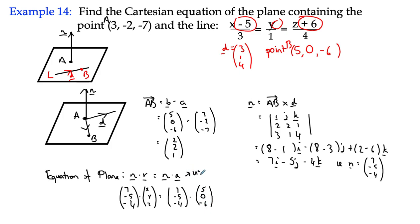And if I multiply all that out, I get 7X minus 5Y minus 4Z is equal to. I'm just going to work that out quite quickly. So that's 5 plus 0 plus 24. Negative 4 times negative 6 is 24. 5 and 24 is 29, just because I'm running out of space there. That's the equation of my plane, okay, in Cartesian form.